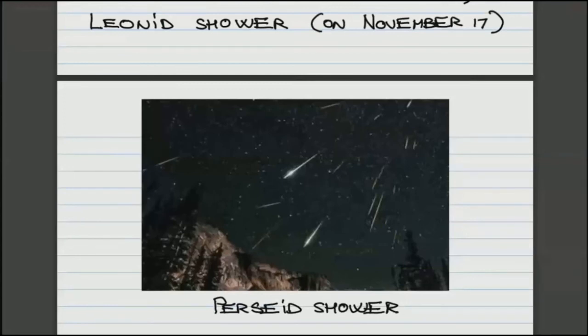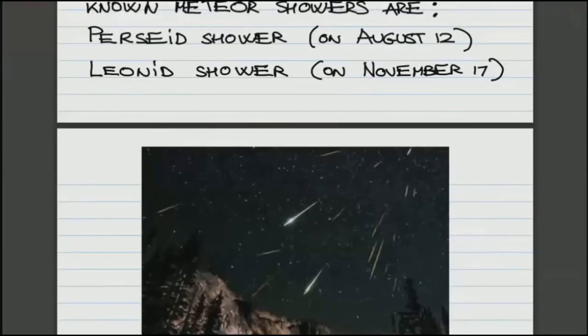It turns out that that spot, the so-called radiant, in the case of Perseid shower, is in the direction of constellation Perseid, hence the name Perseid shower. And the radiant of Leonid shower is in the direction of constellation Leo. So that's where the names come from, where the radiant is located in the night sky.